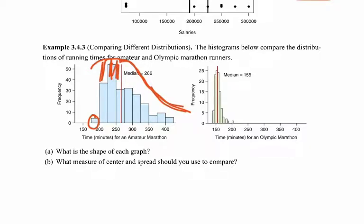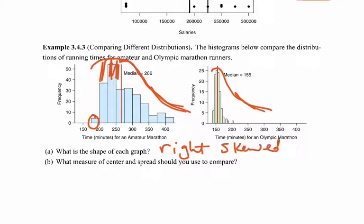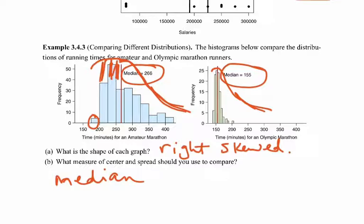The graph for Olympic athletes is also right-skewed — some people are on the longer end, but most are below a certain number. Because both graphs are right-skewed, we want to use the median to make comparisons. The median for amateur runners is 266 minutes, and for Olympic runners it's 155 minutes — which makes sense since Olympic runners run a much faster race. The median is always a safe bet when comparing different distributions.